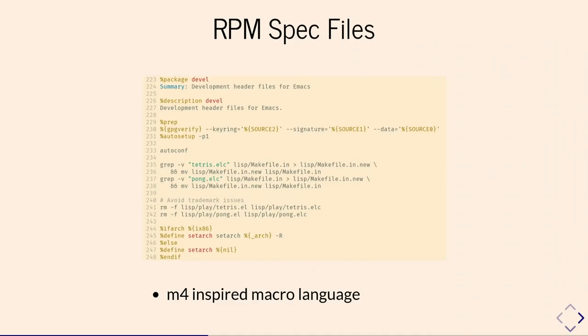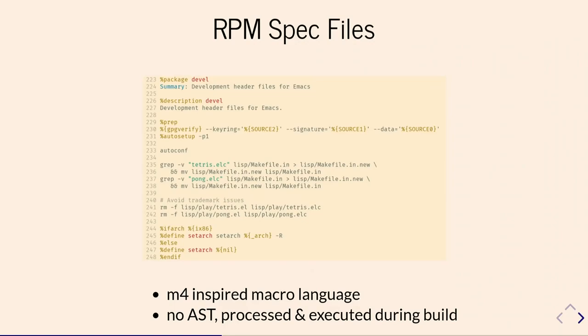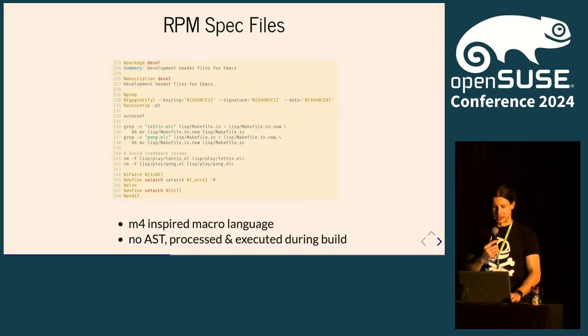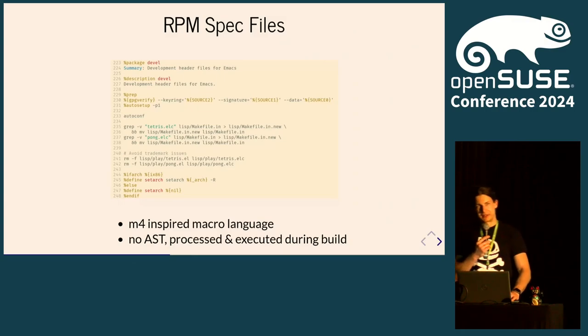Since RPM has historically grown into what it is, the spec files are made to build RPMs. When it was built, no one thought about creating something like an AST. So the whole thing is parsed and then executed. Nowadays you can make RPM pre-process it, but it's really not intended for tooling consumption.